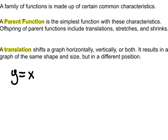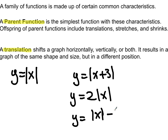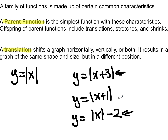With absolute value functions, what is the simplest absolute value function you can have? It's the equation of the line, just with the absolute value there. So this is the parent function for an absolute value function — it's the simplest absolute value function. Examples of offspring would be a translation, something with a stretch, or some combination of all of them, like 2x plus 3 minus 1. A translation is a specific type of offspring that shifts a graph either horizontally, vertically, or both.